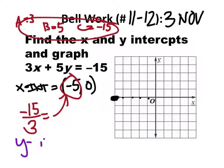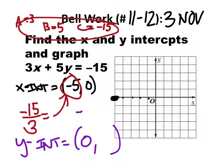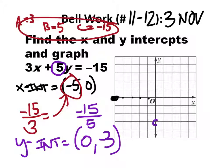The y-intercept should have a 0 in front as a coordinate pair. Again, if you didn't show work, don't expect any credit. So let's take the c value, negative 15, divided by the b value, which is 5, which is negative 3. Negative 3 is right here at (0, negative 3). Let's draw the line. There's the graph.